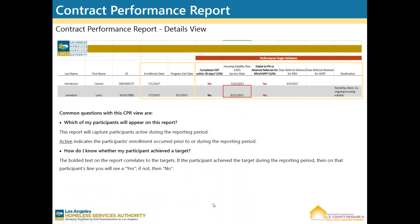Here's a look at the CPR Details View. Some common questions here are: which of my participants will appear on this report? This report will capture participants active during the reporting period. Active indicates the participant's enrollment occurred prior to or during the reporting period. How do I know whether my participant achieved the target? The bolded text on the report correlates to the targets. If the participant achieved the target during the reporting period, then on that line you will see a yes. If they didn't, then you will see a no.